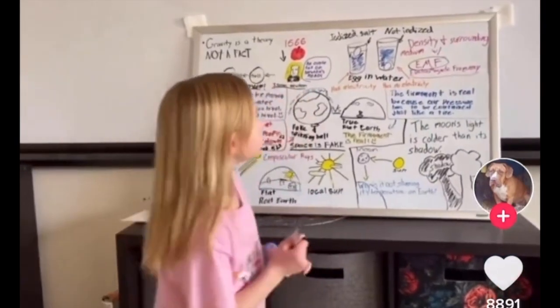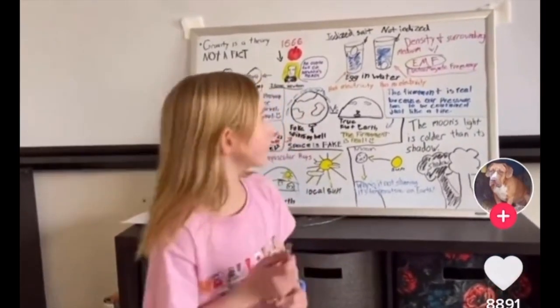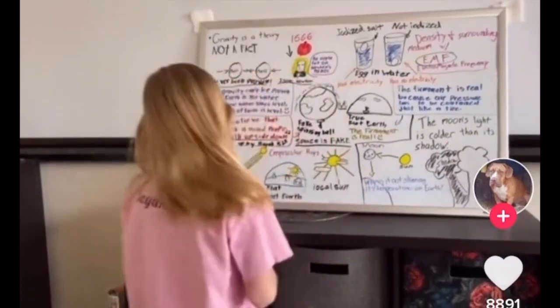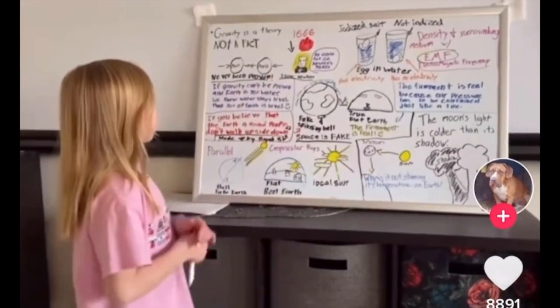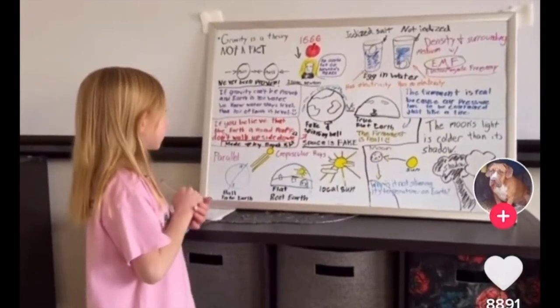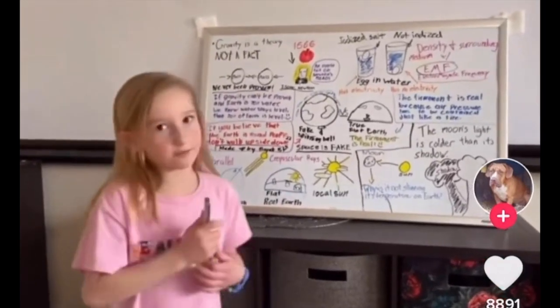Density and surrounding medium with EMF, that stands for electromagnetic frequency. If gravity can't be proven, and Earth is 70% water, we know water stays level, then 70% of Earth is level.